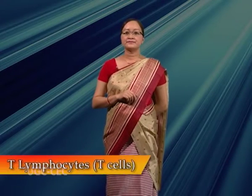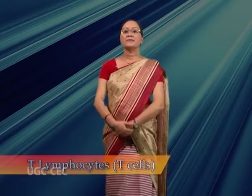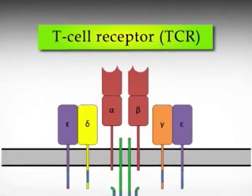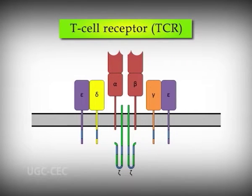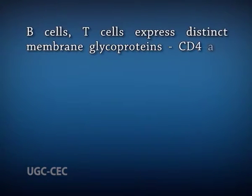T lymphocytes, or T cells, arise in the bone marrow and mature in the thymus. Like B lymphocytes, T lymphocytes have membrane receptors called T cell receptors, or TCRs. TCRs recognize processed antigens — specifically, antigen peptides presented by major histocompatibility complex, or MHC, on antigen-presenting cells.